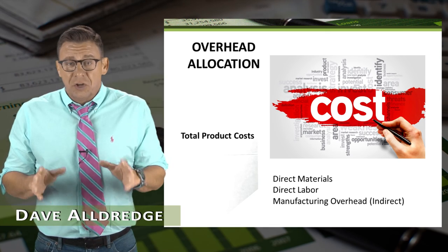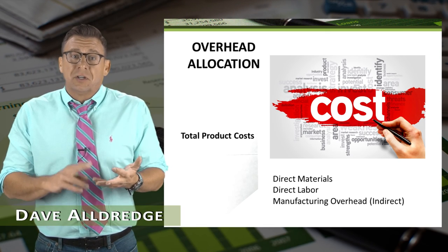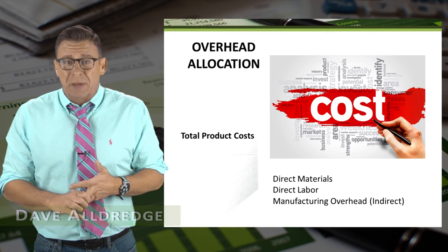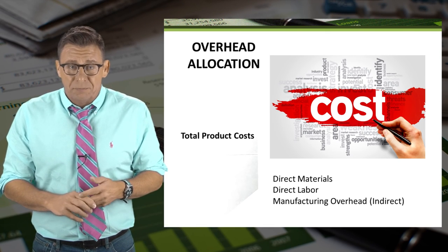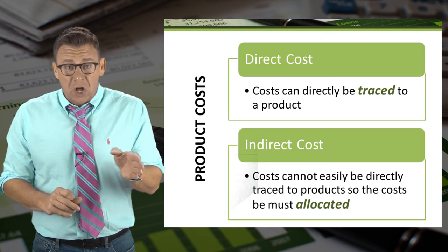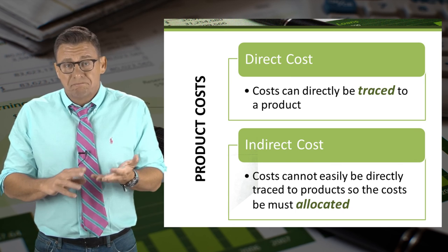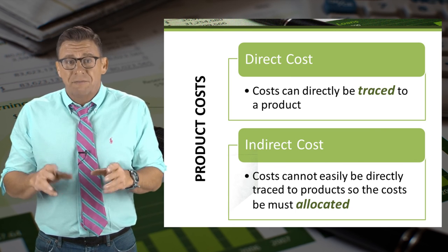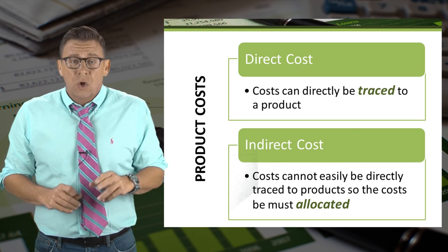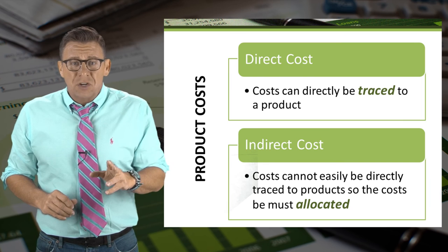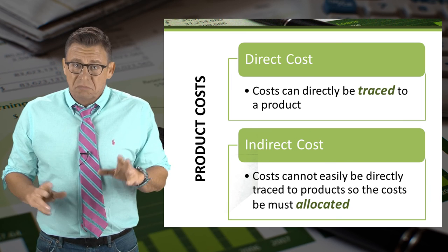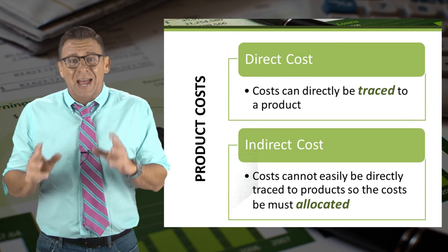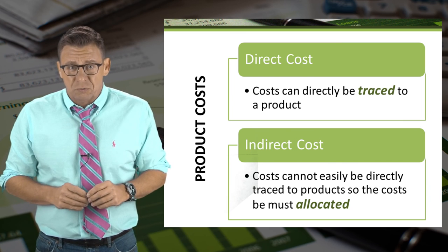Product costs are the total of direct materials, direct labor, and indirect manufacturing overhead. Recall that direct costs, like direct materials and direct labor, are traced to the finished product, whereas indirect costs, like manufacturing overhead, are allocated to the finished product.